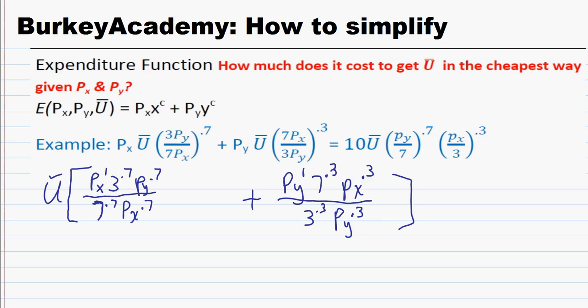It regarded one simplification about when you're going from the Hicksian demand function to an expenditure function. The viewer said he understood that what you do is you plug in the optimal compensated amount of x for the Hicksian demand into the budget equation and the optimal compensated amount of y or the y star into the budget equation to get what we call the expenditure function.